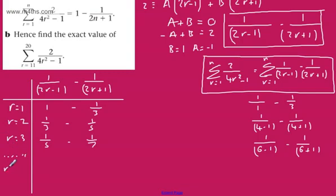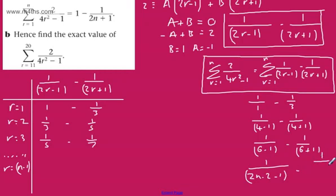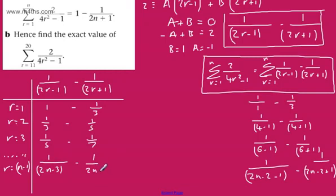Skipping ahead, when r equals n minus 1, we substitute in: 1 over 2 times (n minus 1) minus 1, which simplifies to 1 over 2n minus 3, and then subtracting 1 over 2(n minus 1) plus 1, which gives 1 over 2n minus 1.